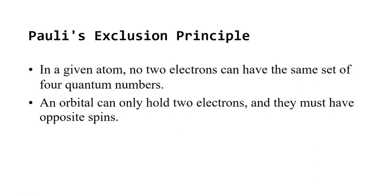The Pauli exclusion principle says that in a given atom, no two electrons can have the same set of four quantum numbers. This is because two electrons in the same orbital must have opposite spins — two electrons cannot occupy the same spot in space.